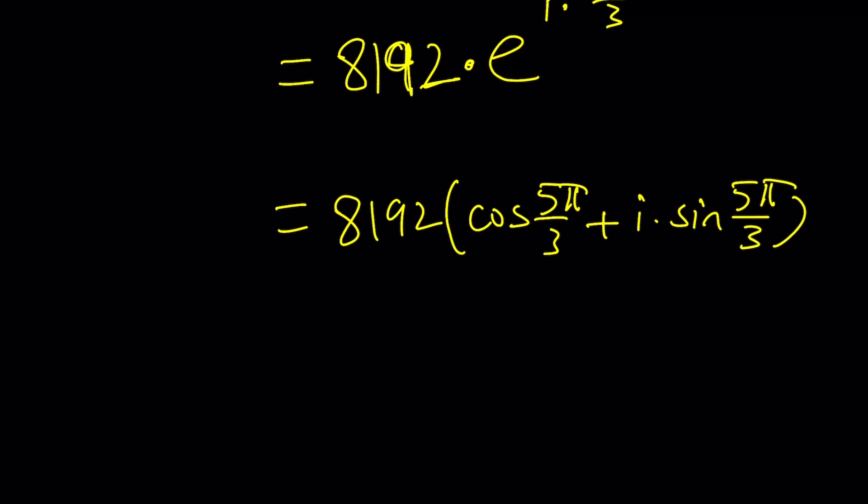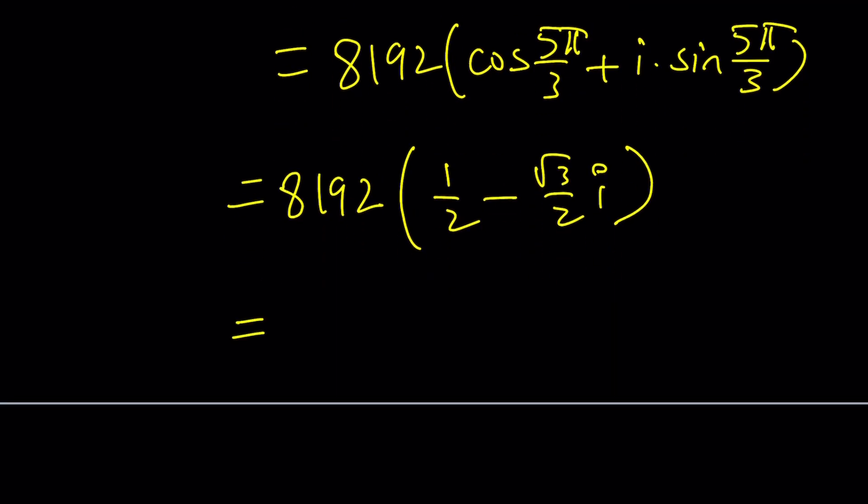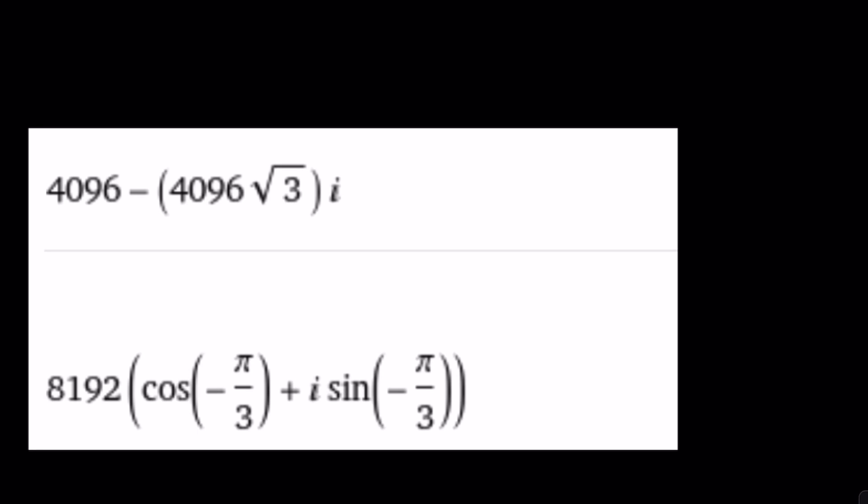So this is going to be 8192 times one half minus root 3 over 2i. Don't forget it's a minus sign or a minus imaginary part and this is going to be 4096 minus 4096 root 3i. We forgot the root 3. I don't know how I made it disappear. It's going to be root 3i. There you go. Okay so that should be the answer for 1 minus root 3i to the 13th power and let's see if I have an answer from Wolfram Alpha. Yes I do and it should be the same thing. Right?